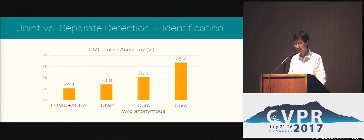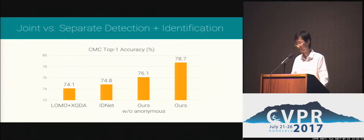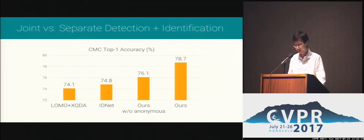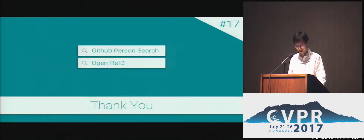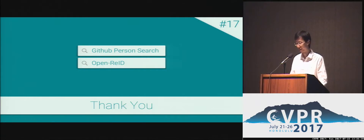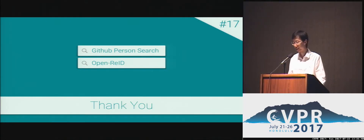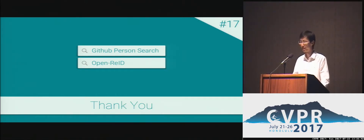So one more thing: anonymous people would benefit feature learning. You may find our code with the keywords 'GitHub person search' or 'OpenReid ID'. Thank you very much, and see you at poster number 17.